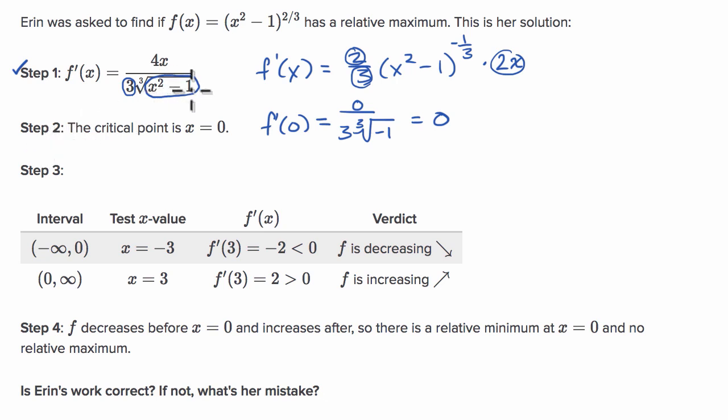Well, if x squared minus one is equal to zero, you take the cube root of zero, you're going to get zero in the denominator. So what would make x squared minus one equal to zero? Well, x is equal to plus or minus one. These are also critical points because they make f prime of x undefined.